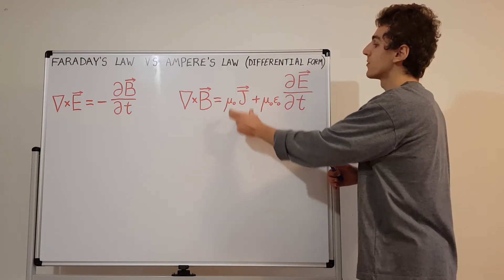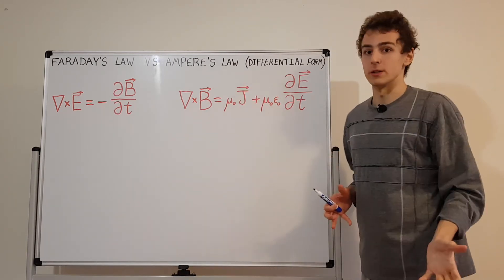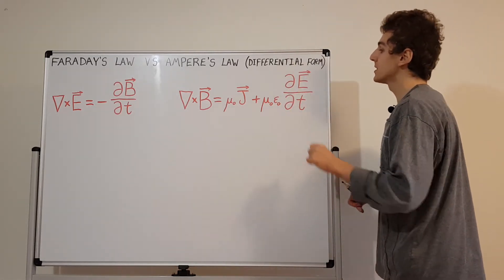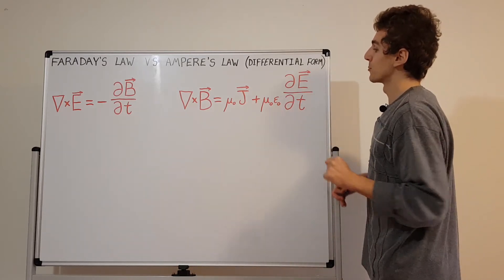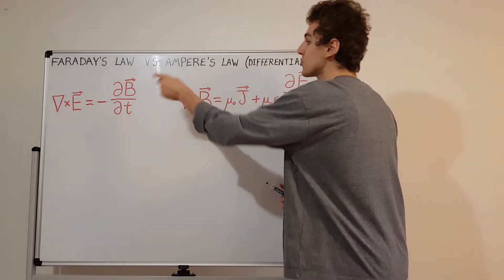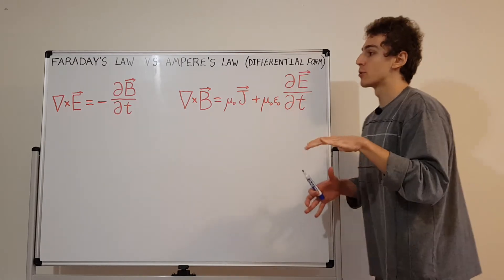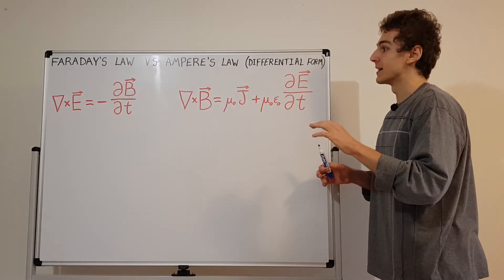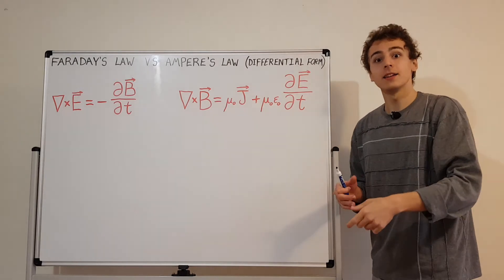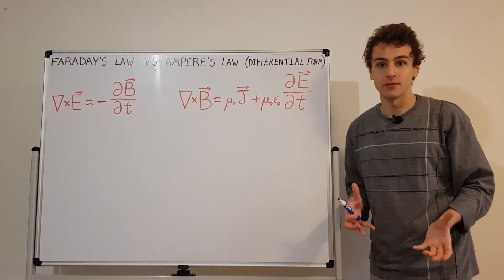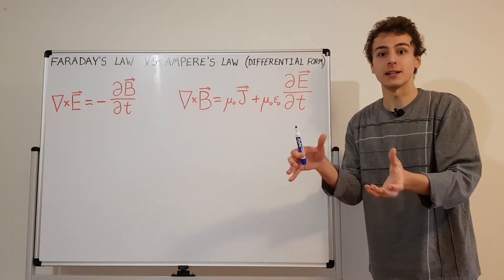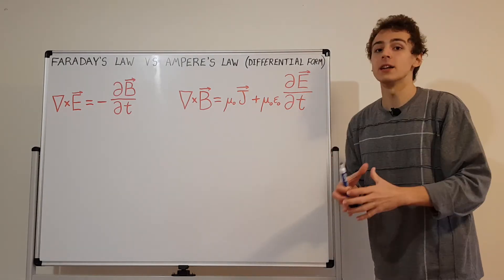If you take the surface integral of J, you get the current I in amps. The other term in Ampere's law is the displacement current — describing how the electric field changes with respect to time. Notice there's no negative sign here; this is positive. So electric fields and magnetic fields can produce each other through circulation, and that's actually the principle behind electromagnetic waves — electric and magnetic fields interacting and causing each other to circulate, which is how electromagnetic waves propagate through space.